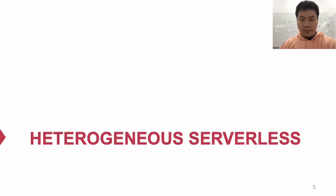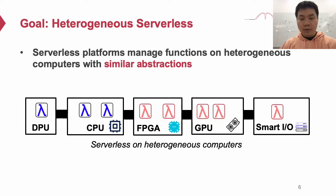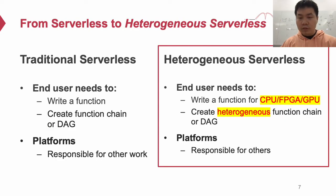This work proposes heterogeneous serverless computing that enables heterogeneous devices for functions. The goal of this work is to propose the first heterogeneous serverless system, which allows a serverless platform to manage functions on heterogeneous computers with a similar abstraction. In this work, we consider CPU with different ISAs, FPGA, and DPU as the heterogeneous devices. Serverless functions should be able to run on any of these devices. Normally, serverless allows an end user to write functions in some required languages and upload these functions to platforms. End users can also connect different functions into a function chain or a DAG to implement application logics.